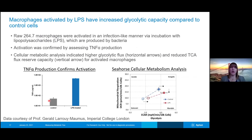So just to go over the design of this assay — we're going to be looking at macrophages, a type of immune cell. These macrophages are activated with a compound called lipopolysaccharides or LPS. These lipopolysaccharides are produced by bacteria, and so when immune cells see these lipopolysaccharides, they say there's a danger here, we need to activate and produce an immune response. In order to confirm the activation of these macrophage cells by LPS, you can look for TNF-alpha production.